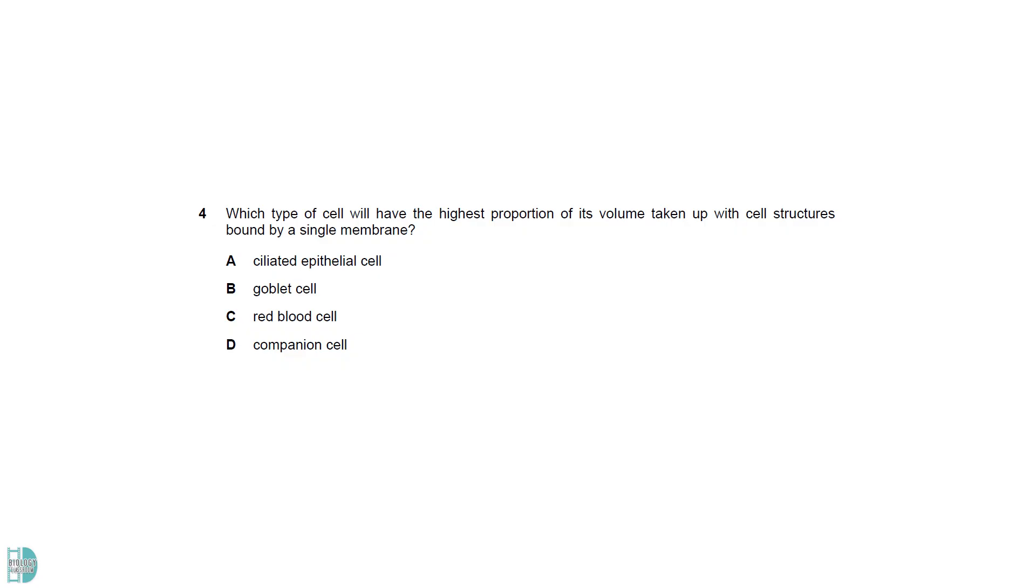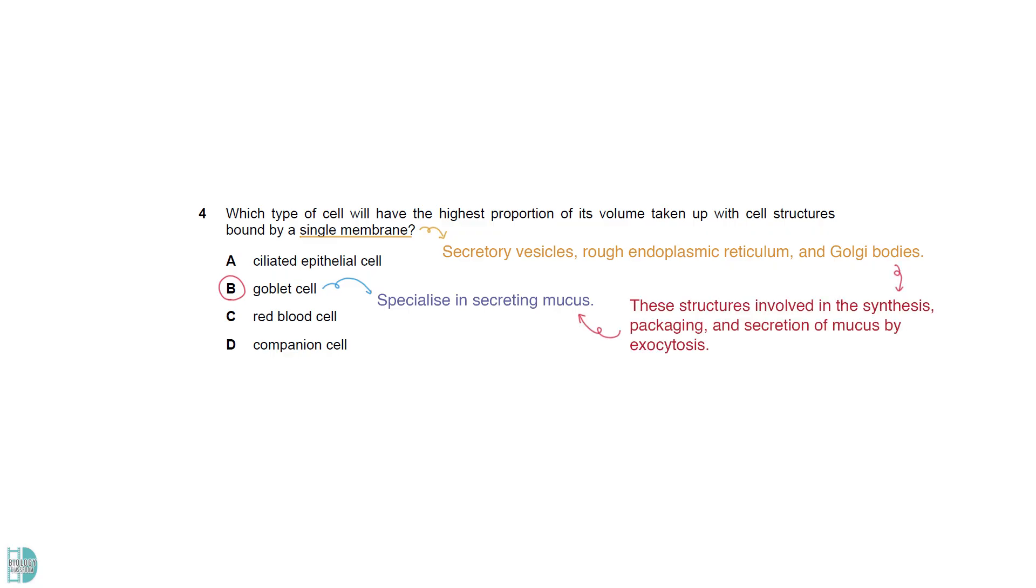Cell structures bound by a single membrane include secretory vesicles, rough ER, and Golgi bodies. Goblet cells specialize in secreting mucus. They have these structures abundantly because they are involved in the synthesis, packaging, and secretion of mucus by exocytosis.